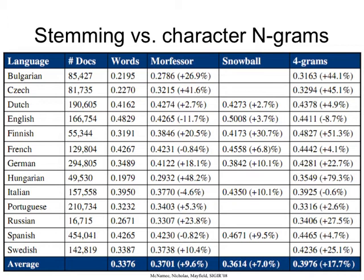The 'words' column shows what happens if you do no morphological analysis — just tokenize on spaces and punctuation. Then there's Morfessor, one family of stemmers available for most European languages. Snowball is another, generally more accurate but available for fewer languages. And then there's 4-grams. For German, using words gives average precision of about 34. Morfessor gets you about 41, and 4-grams get you 42. That's impressive — it's a really simple technique and it usually does quite well.